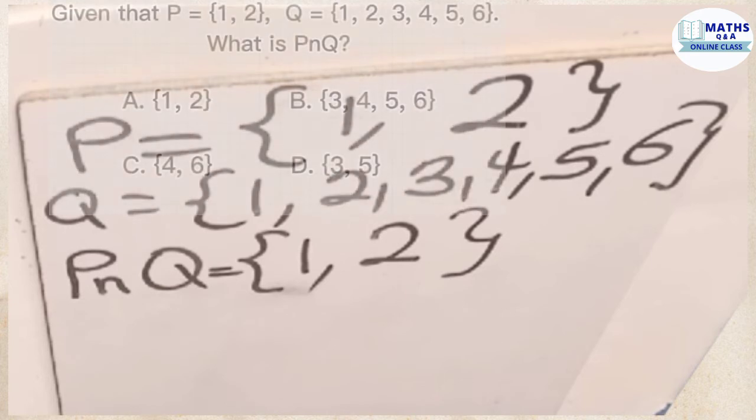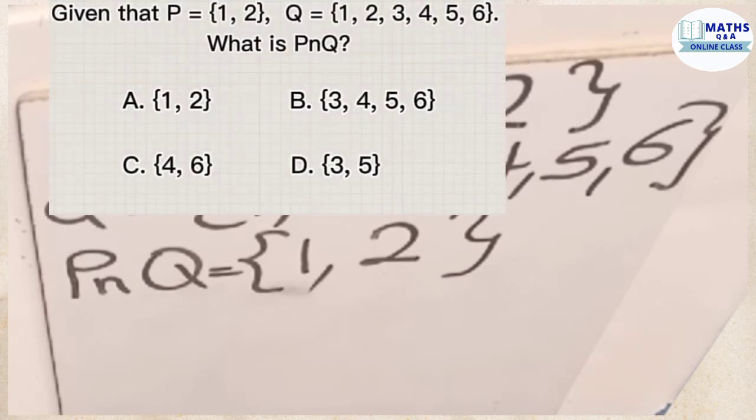So which of the options given to you do you think is the correct answer? We have A, which is 1, 2; B, which is 3, 4, 5, 6; C, which is 4, 6; and then D, which is 3 and 5. And the correct answer is A, which is 1 and then 2.